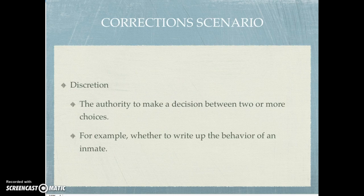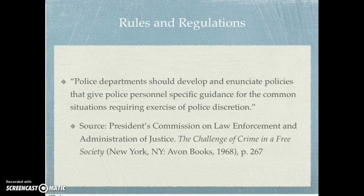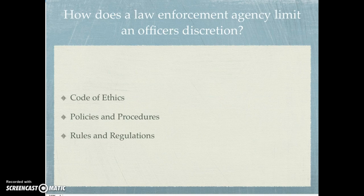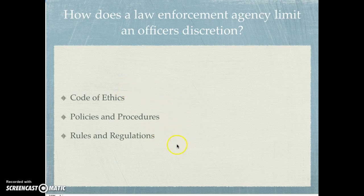To recap: when the assignment guidelines ask what professional and ethical standards should be in place from the police department to assist this officer in his decision making, these are the things that are in place — codes of ethics, policies and procedures, and rules and regulations. These are standards in place to help and assist the employee as they deal with the array of decision-making processes that occur out in the field. For example, the rules and regulations deal specifically with gratuities — they're not acceptable; even free coffee shouldn't be acceptable.